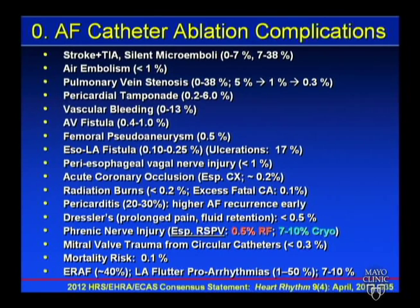Pulmonary vein stenosis incidence in our series in the late 1990s was 5% — patients who developed more than 50% stenosis, symptomatic or asymptomatic. This reduced to 1% in the early 2000s and currently 0.3%, as learning curves improved and ultrasound aided catheter positioning. More intimate knowledge of pulmonary vein-atrial anatomy has thankfully reduced the incidence over time.